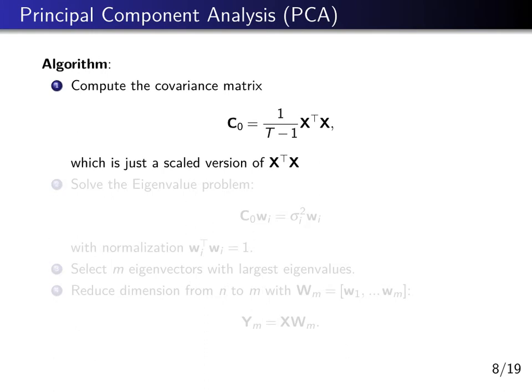Now we summarize our findings by formulating the principal component analysis, or PCA, algorithm. First, we start from our data matrix X, and we compute the covariance matrix X transposed X. We also divide it by t minus 1, the number of data points minus 1.